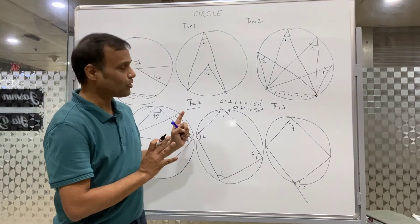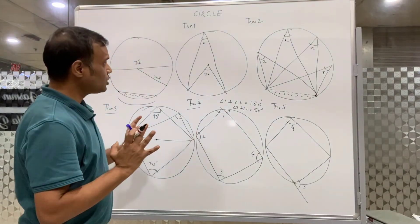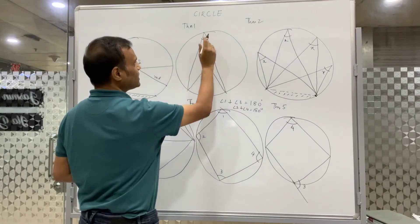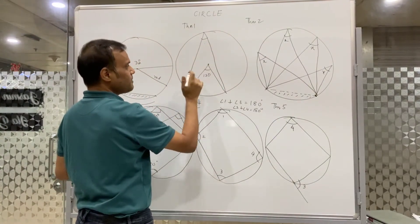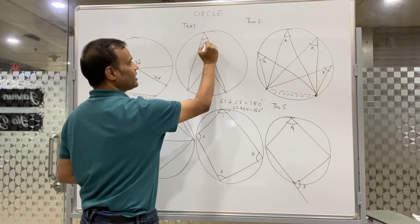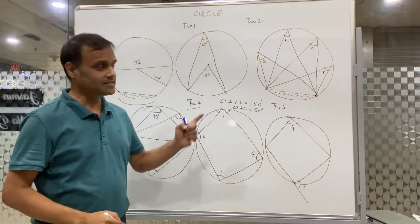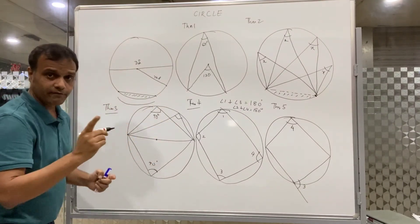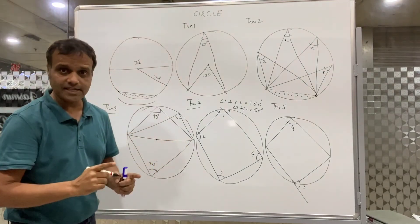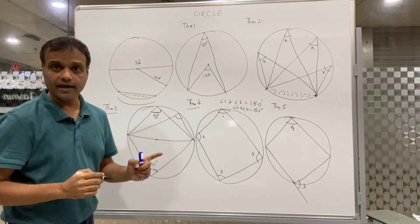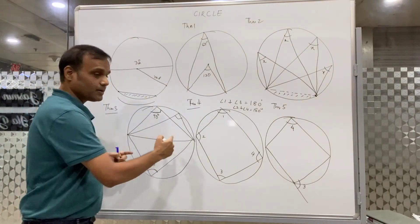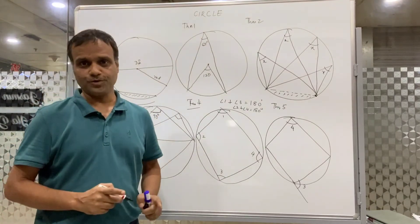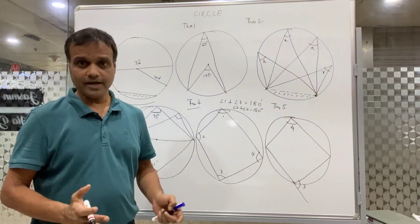All questions can be solved on the basis of these five theorems. For example, if the angle given at the center is 130 degrees, the angle made on the major arc by the same minor arc will be 65 degrees, which is half of the angle made at the center. For theorem three, the moment you see a line drawn from the center, immediately identify the angle that subtends 90 degrees at the diameter. In the next video we will do many questions based on these five theorems.